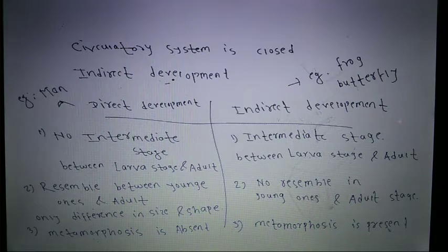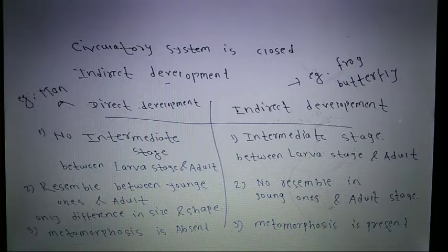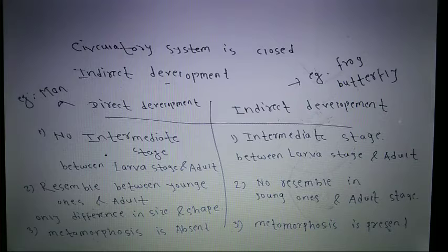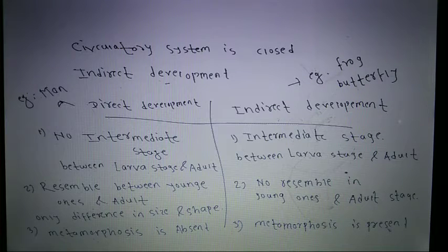The development in Urochordata is indirect development. Direct development means no intermediate stage between the larva stage and adult stage. In indirect development, an intermediate stage is present between the larva stage and the adult stage.